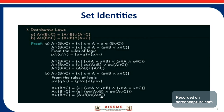Next is the distributive law. The first distributive law is A intersection (B union C) equals (A intersection B) union (A intersection C), and the second is A union (B intersection C) equals (A union B) intersection (A union C). For the first distributive law, A intersection (B union C) is the set of all X such that X belongs to A and X belongs to B union C.